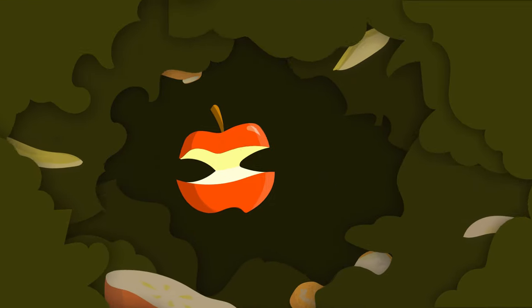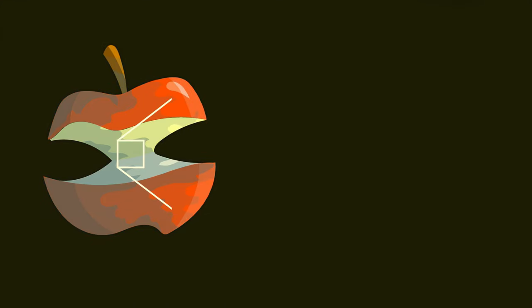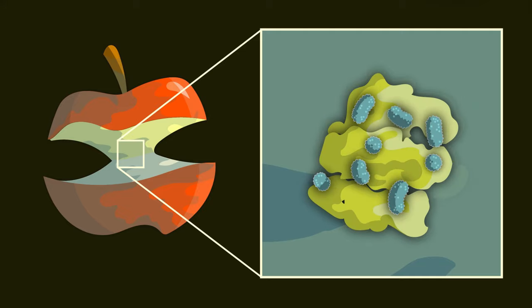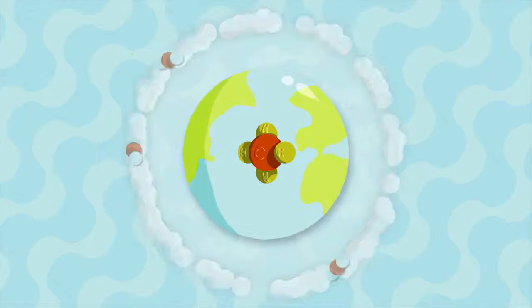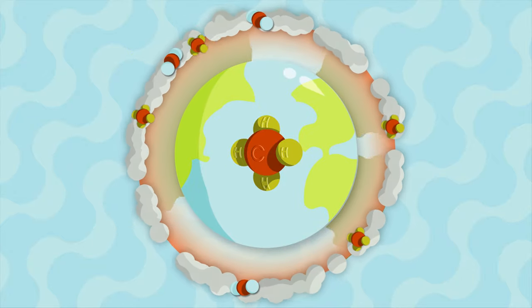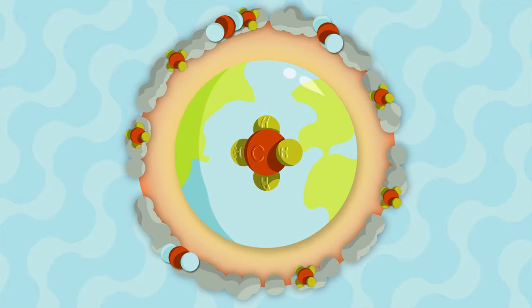In landfills, food scraps and other organic material are broken down by bacteria in the absence of oxygen, which produces methane, a potent greenhouse gas with even greater capacity to trap heat in our atmosphere than carbon dioxide.